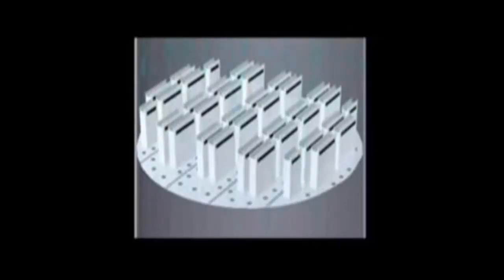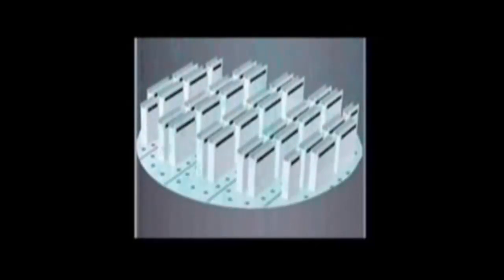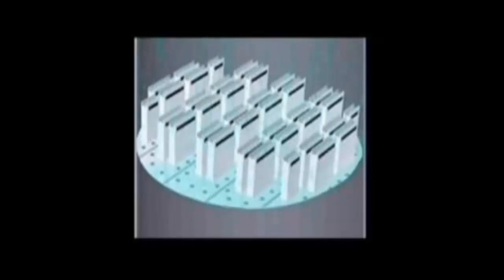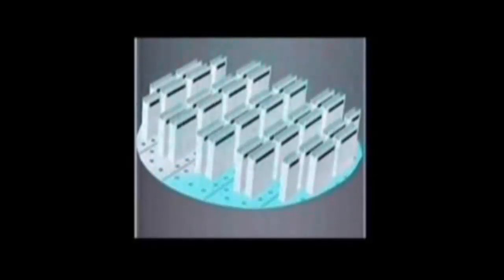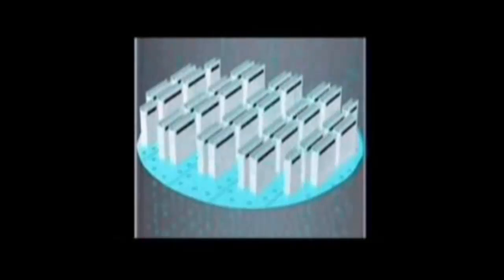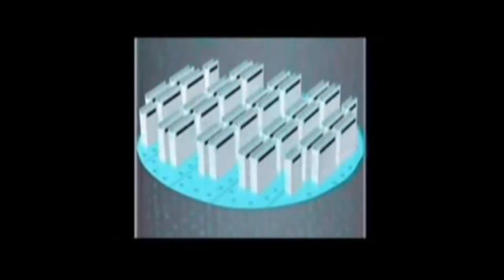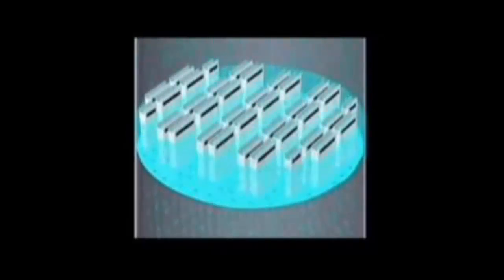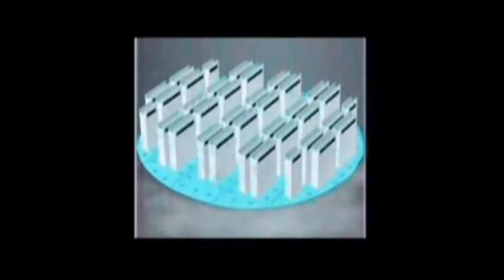For larger diameter columns and for low liquid rates, the distributor must be exactly level — within 4 mm with a 3 m diameter — or all pour points will not function. On the other hand, the risers must be high enough to accommodate backup for high liquid flow rates. The orifice distributor has less fouling resistance, as the small holes can become plugged.